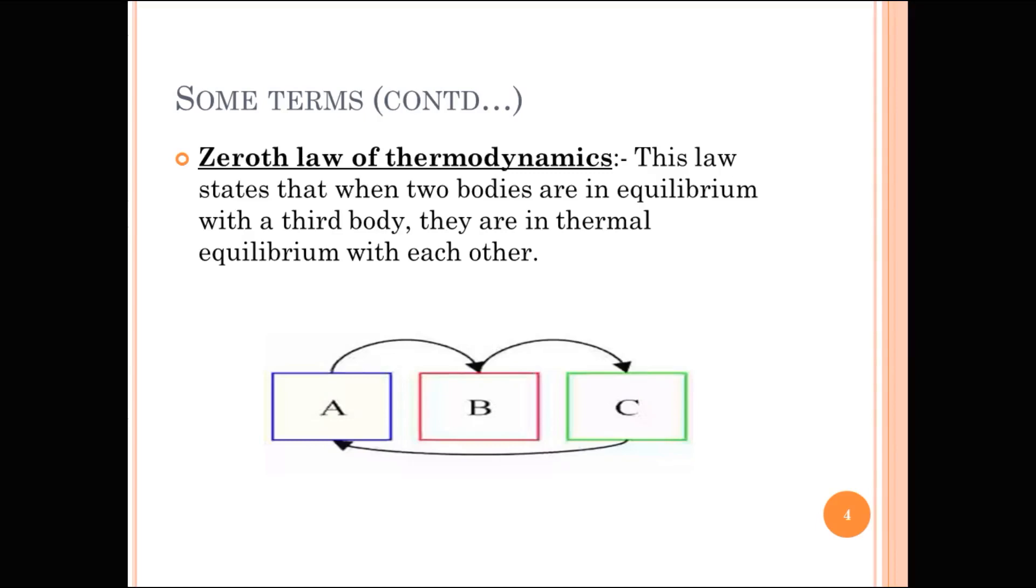Next one, Zeroth law of thermodynamics. Zeroth law of thermodynamics states that when two bodies are in equilibrium with a third body, they are in thermal equilibrium with each other. That means, if a and b possess the same temperature and b and c have the same temperature, then a and c will possess the same temperature.